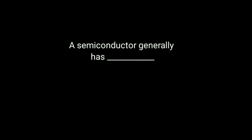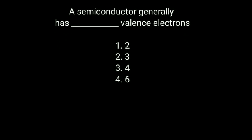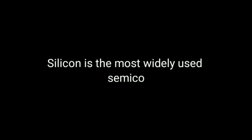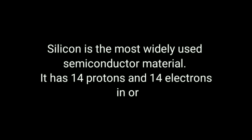Next question: A semiconductor generally has blank valence electrons. Options: 2, 3, 4, and 6. Answer: A semiconductor generally has 4 valence electrons. Silicon is the most widely used semiconductor, with 14 protons and 14 electrons — 2 in the innermost shell, then 8, then 4. So the answer is 4 electrons in the outer band.